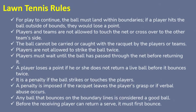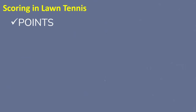Now we will discuss about the scoring in lawn tennis. First, the smallest measuring unit is called points. Points increment from 'love' — which is also the number zero — then 15, 30, and 40. So there are four point values: love (zero), 15, 30, and 40.